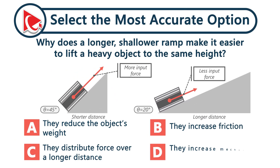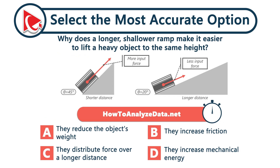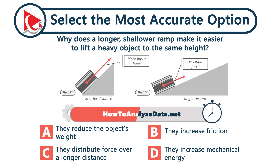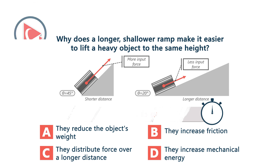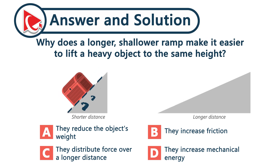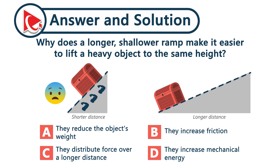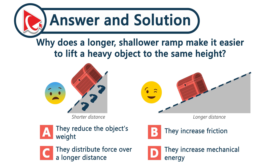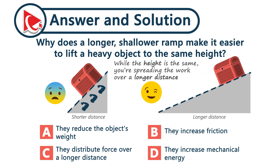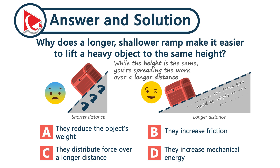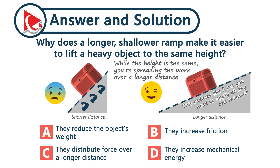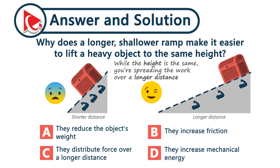Why does a longer, shallower ramp make it easier to lift a heavy object to the same height? Push a box up a steep ramp and it feels like a workout. But stretch that ramp out — make it longer and shallower — and suddenly it's easier. While the height is the same, you're spreading the work over a longer distance, which reduces the force needed at any moment. The total work doesn't change, but the ramp gives you mechanical leverage. The correct answer is choice C.